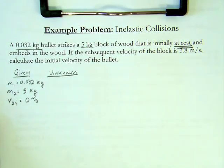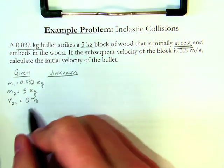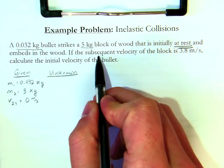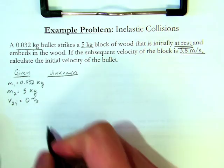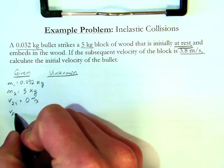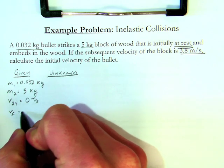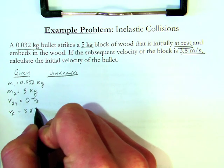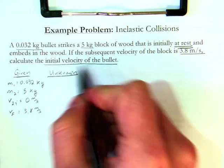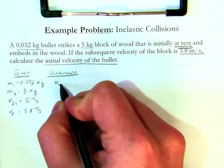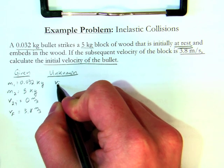And then, I know that the subsequent velocity, meaning the final velocity after the collision, is 3.8 m per second, so my final velocity is going to be 3.8 m per second. Now, I need to calculate the initial velocity of the bullet, so my initial velocity of the bullet is what I'm looking for.